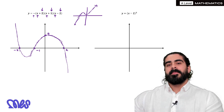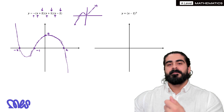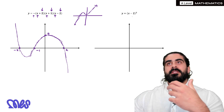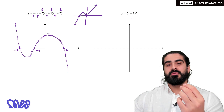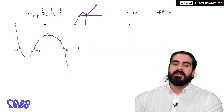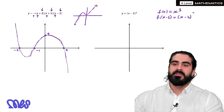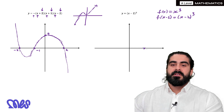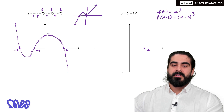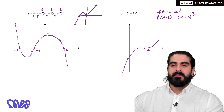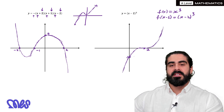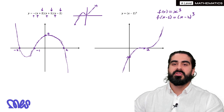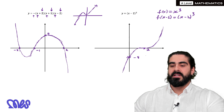Now x minus 2 cubed. The easiest way to think of it is that it's the original x cubed graph shifted by 2 to the right. If you had f of x equals x cubed then f of x minus 2 would be x minus 2 cubed — so that's a shift to the right by 2. What does a cubic look like? It comes up, goes flat and then comes back up. You can work out where it crosses the y-axis by making x equals 0: you have minus 2 cubed which is minus 8.